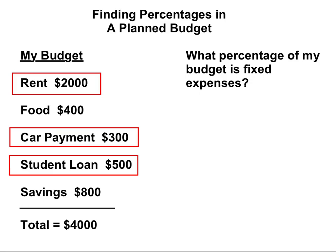A good example is a car payment. Typically, you will be under a contract to pay the same amount every month for a certain number of months. This is why it is fixed. Food is not a fixed expense because the amount you spend on food might change from month to month depending on what you eat. Food is a variable expense.